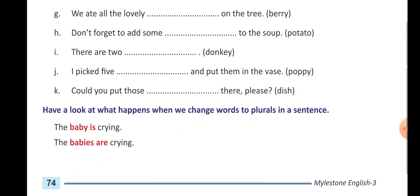I number: there are two donkeys, D-O-N-K-E-Y-S. Same rule: before Y there is a vowel, so we will write D-O-N-K-E-Y-S. I picked five puppies and put them in the vase, P-O-double P-I-E-S. Could you put those dishes there please, D-I-S-H-E-S. In this way you will complete your Let's Try 3.